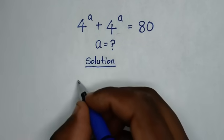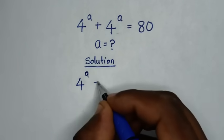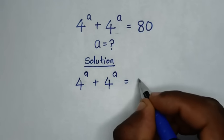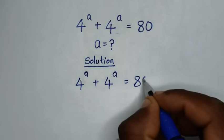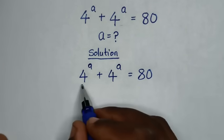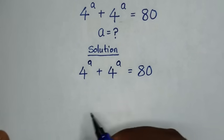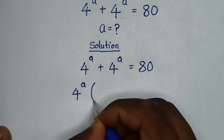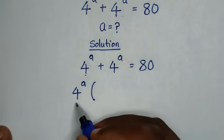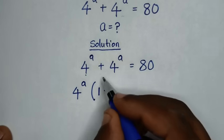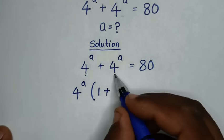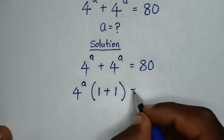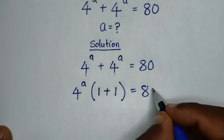From our problem, which is 4 power a plus 4 power a is equal to 80. Here, 4 power a is common, so we take 4 power a out of the bracket. Then 4 power a divided by 4 power a is 1, plus 4 power a divided by 4 power a is 1, in bracket, is equal to 80.